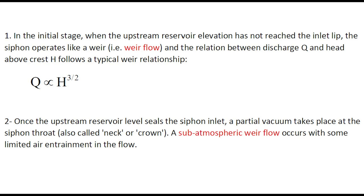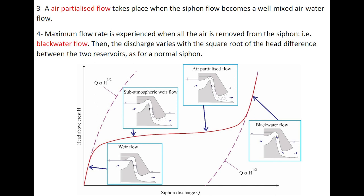With increasing discharge, an air-partialized flow takes place when the siphon flow becomes a well-mixed air-water flow. Maximum flow rate is experienced when all the air is removed from the siphon — the so-called black water flow — after which the discharge varies with the square root of the height difference between the two reservoirs.